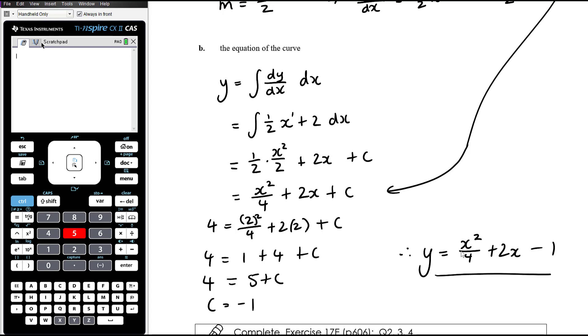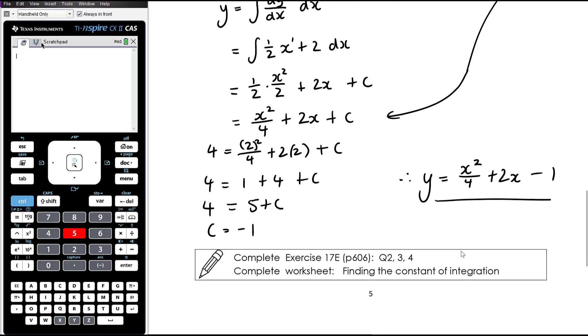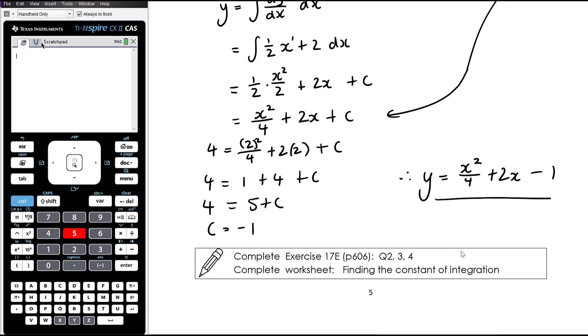Okay, so still anti-differentiating, but then just taking things that step further by being able to substitute a point or some information about the function into the curve in order to find the unknown c or constant of integration. Okay, so again, some work today here. First of all, from exercise 17e, just questions 2, 3 and 4. And then there's an additional worksheet involving various problems involving finding the constant of integration. And you should do all the questions on the worksheet.